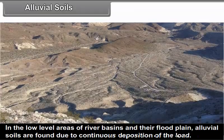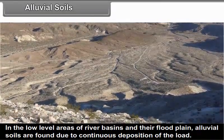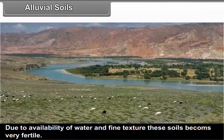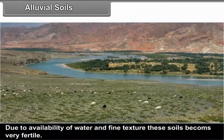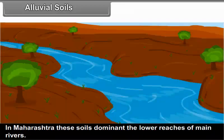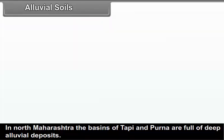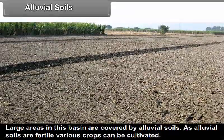Alluvial soils: In the low-level areas of river basins and their flood plains, alluvial soils are found due to continuous deposition of load. Due to availability of water and fine texture, these soils become very fertile. In Maharashtra, these soils dominate the lower reaches of main rivers. In coastal tracts of Konkan, particularly near the mouth of various rivers, these soils are found. In North Maharashtra, the basins of Tapi and Purna are full of deep alluvial deposits. As alluvial soils are fertile, various crops can be cultivated.